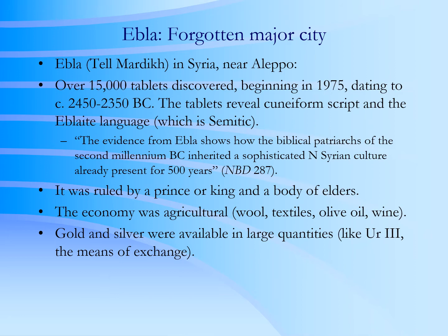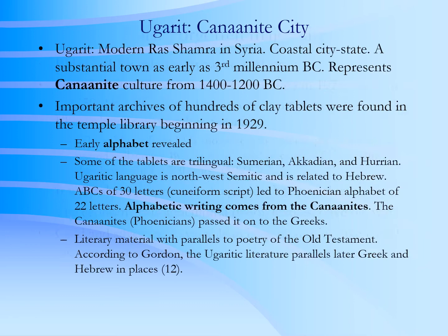Some scholars knew of a city named Ebla from some of the ancient tablets but knew nothing else about it. Then the city itself was discovered, and it turned out to be quite a large and important city of its time — a city forgotten to history, just like the Hittites, and then later discovered to be significant. A large archive of tablets with writing was discovered there. Another significant discovery was Ras Shamra, along the coast way up in Syria. It was a Canaanite settlement, and the language was also Semitic, just like at Ebla.